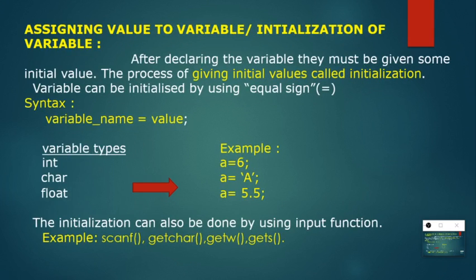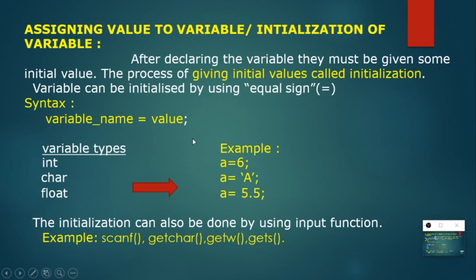Next is assigning a value to a variable. You can assign a value using the equal-to sign, which is the assignment operator. The syntax is: variable name = value. For example, for int: a = 6; for char: a = 'a' (in single quotes); and for float: a = 5.5. Not only with the equal-to symbol — you can also assign a value to a variable using input functions, both formatted and unformatted, such as scanf, getchar, getw, and gets. With the help of input functions, we can also assign a value to a variable.